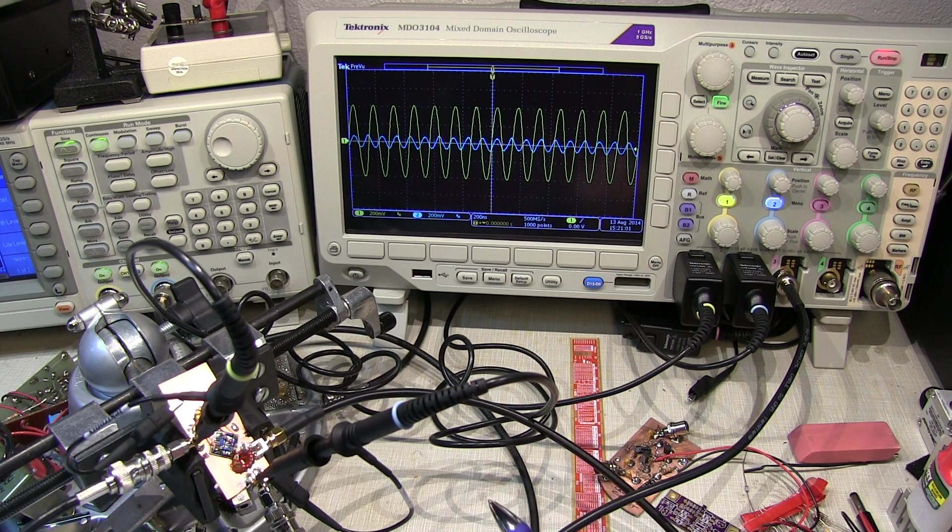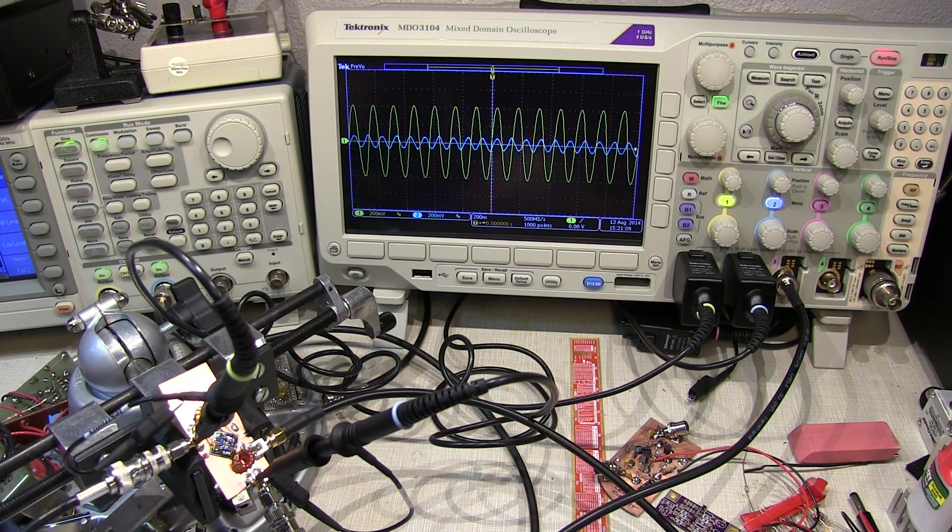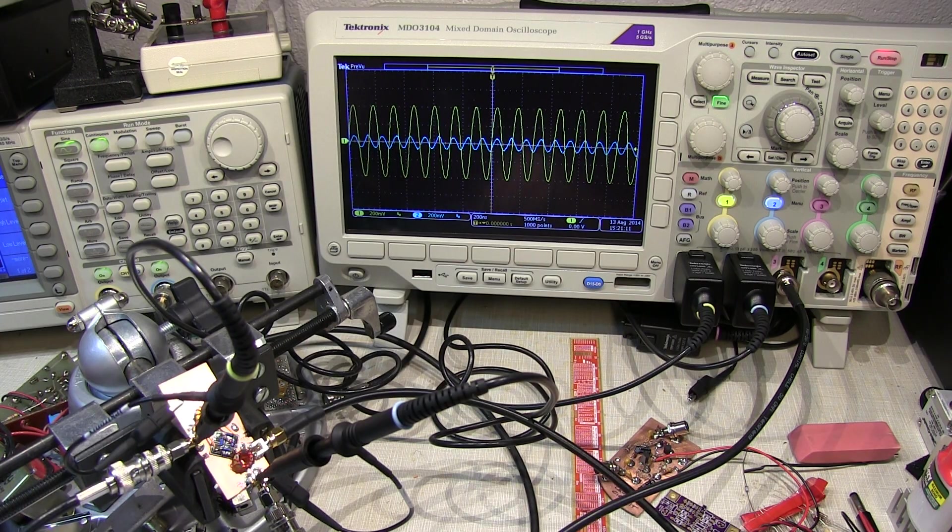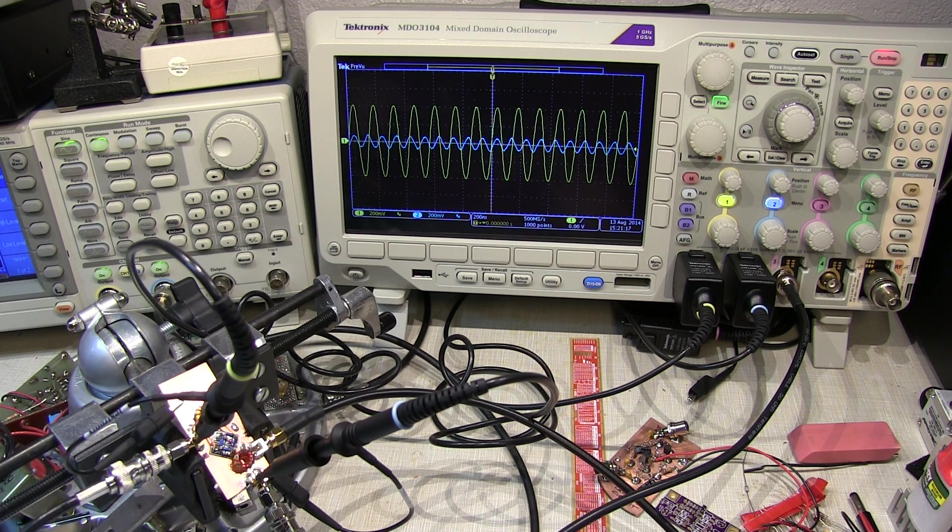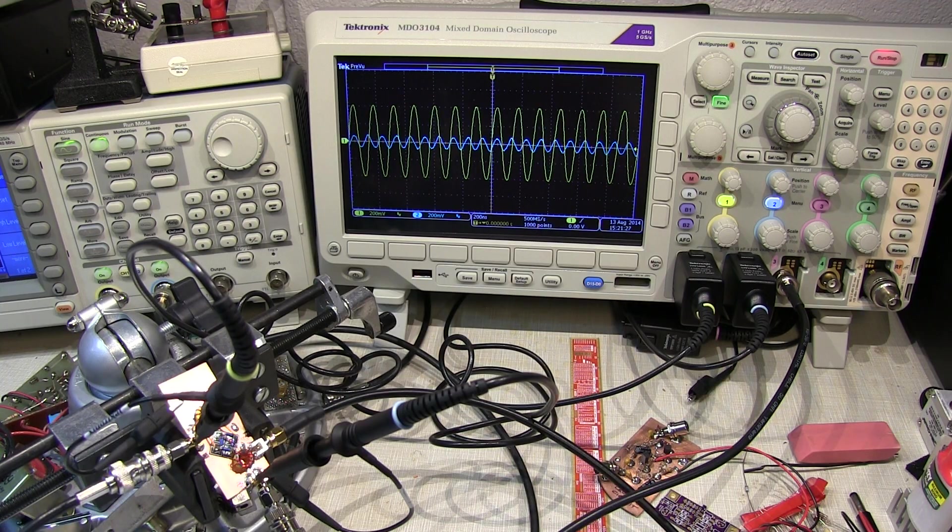We're using a signal generator back here to generate signals. In this case I just arbitrarily picked 7 megahertz for the local oscillator, 10 megahertz for the RF. And that should give us some signals at 3 megahertz and at 17 megahertz as well as some of the harmonics of those things. Let's go take a look at how these signals get formed, at least from a theory standpoint first and then we'll actually go make some real measurements on the IF output here.